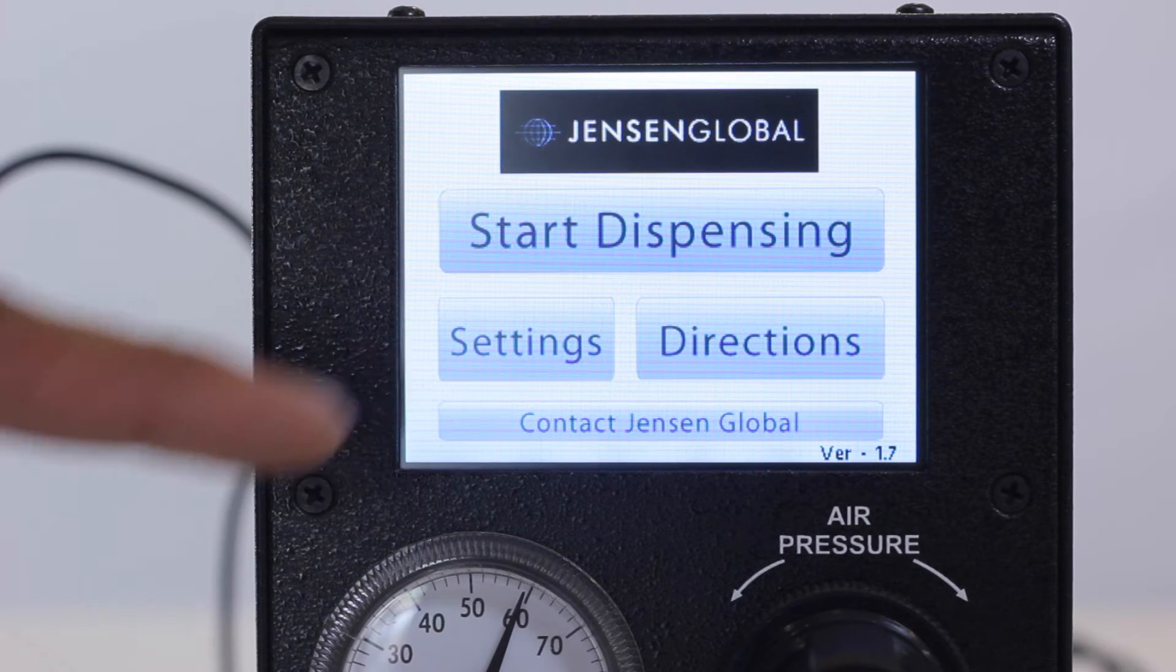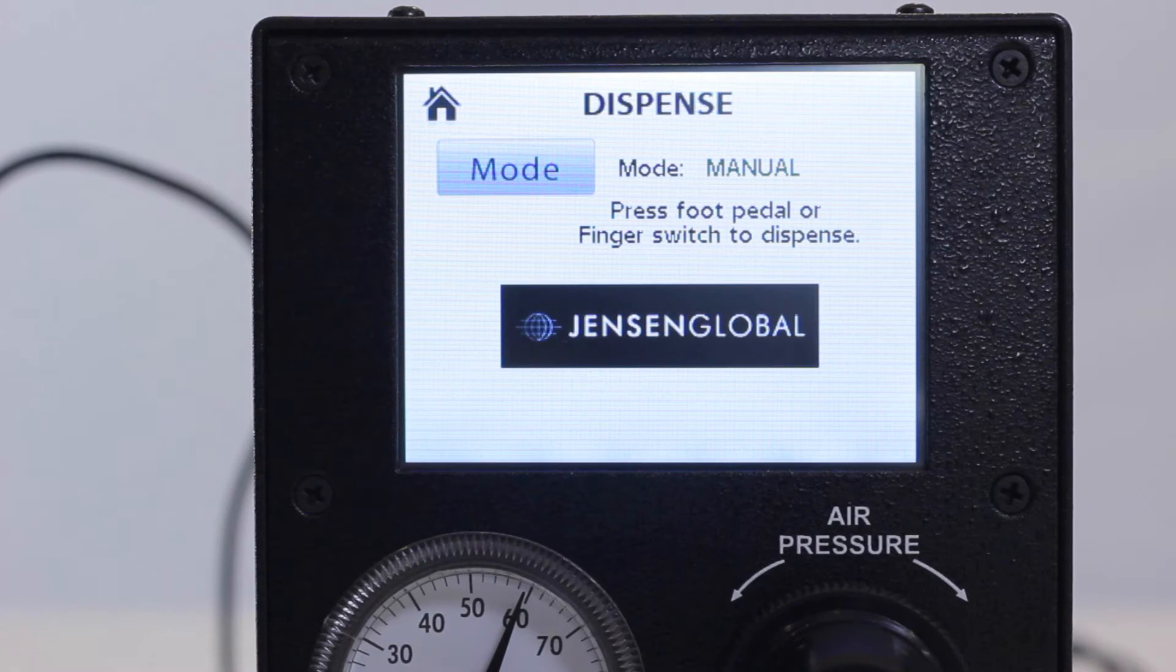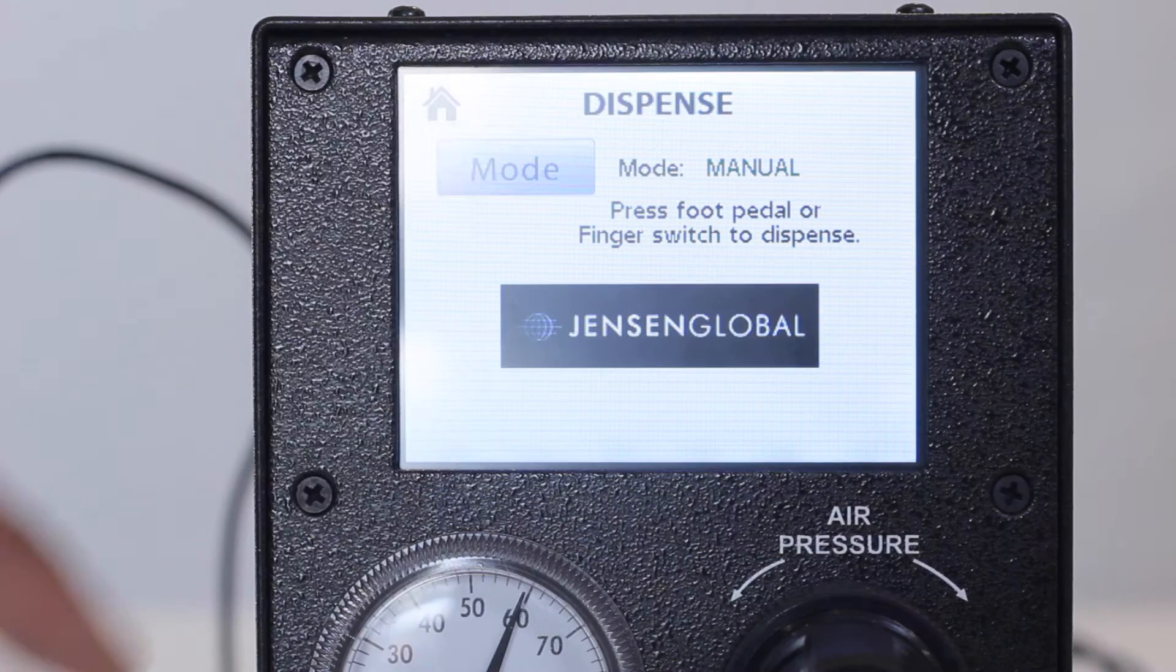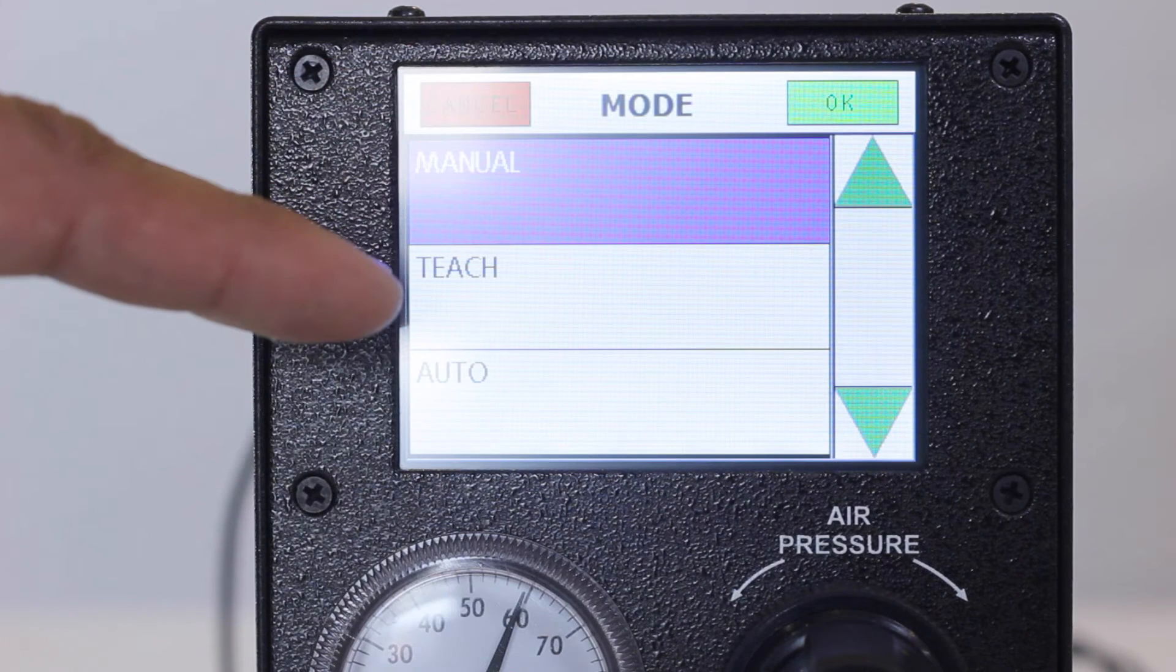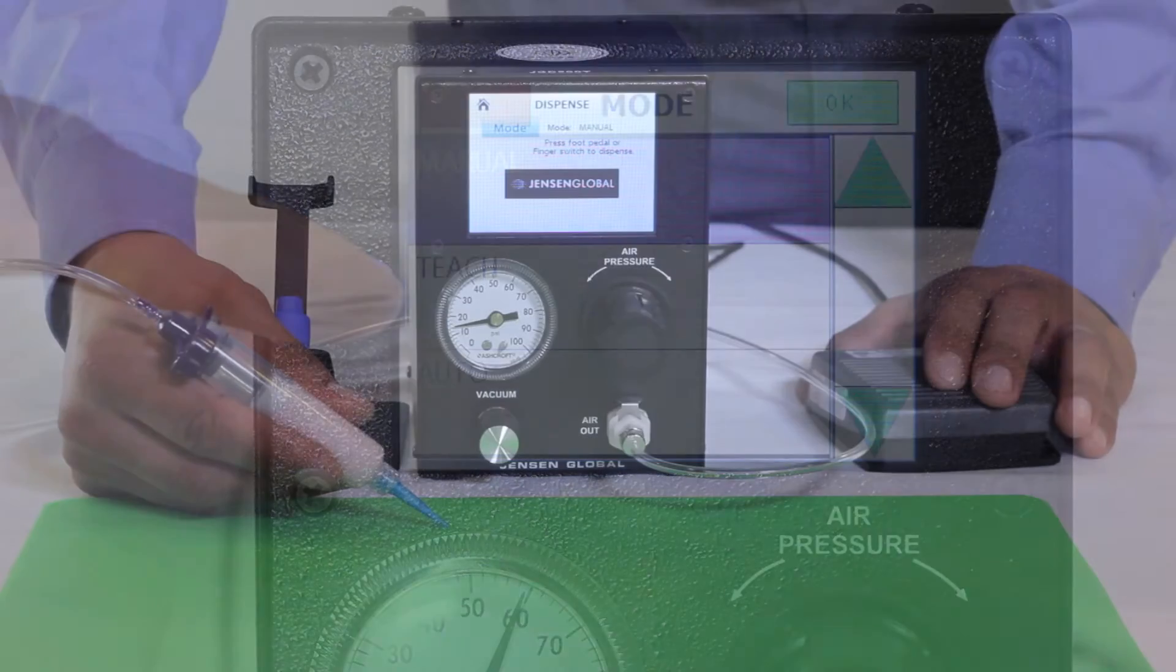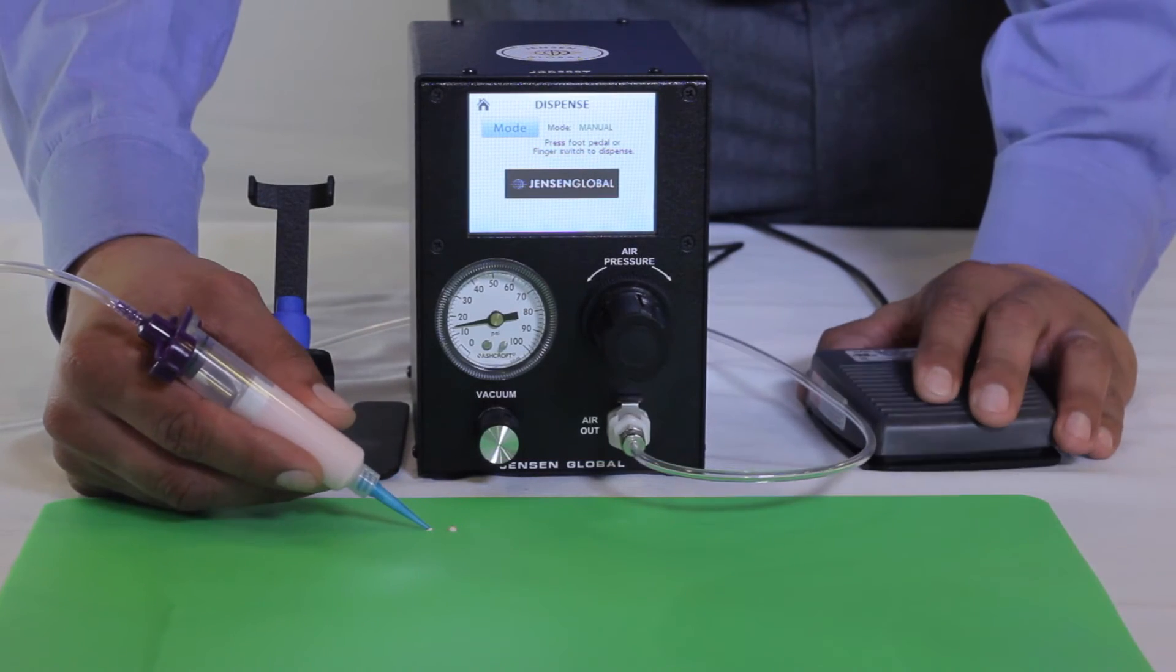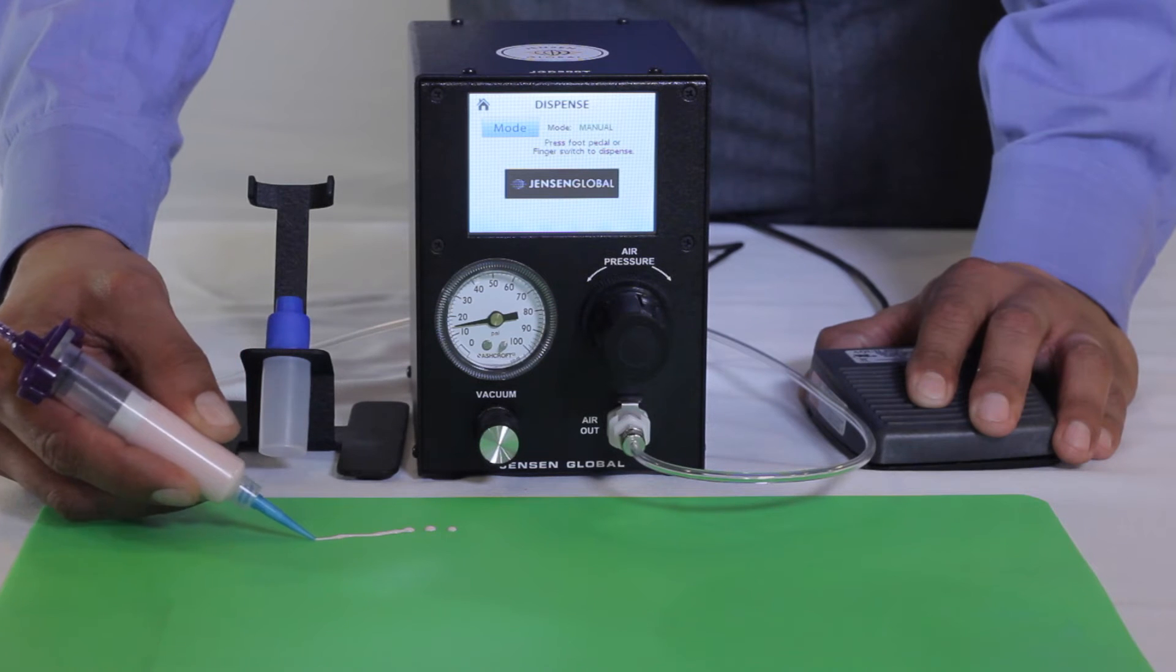Press the Start Dispensing tab and it will bring you to a screen where you can cycle and select the mode of your choice: Manual, Teach or Auto. Manual mode is a great opportunity to get familiar with the unit and select the proper air pressure setting.